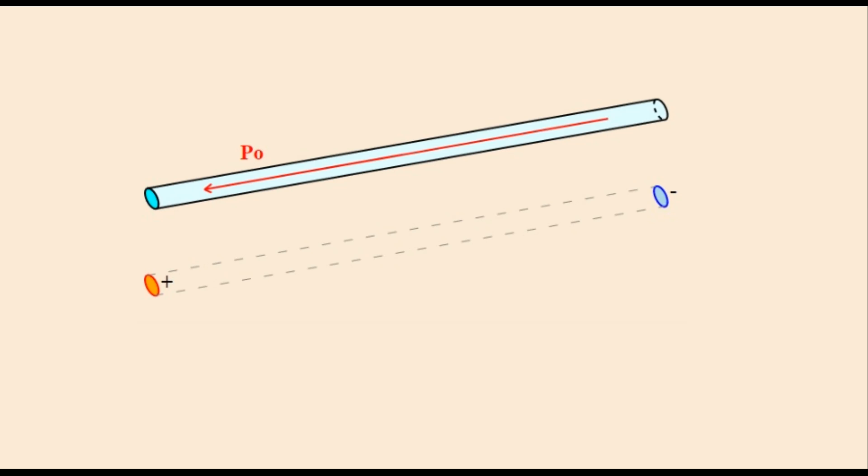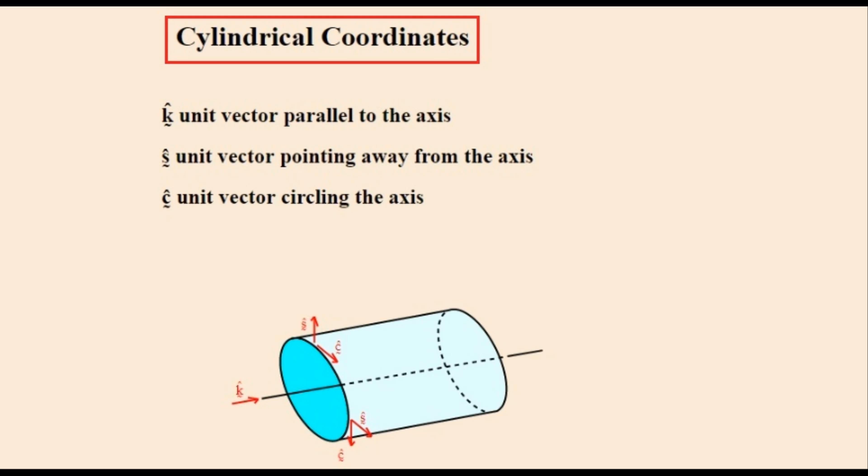A good example is a thin electrically polarized rod as shown, which can be substituted for by two charged discs shown underneath it. Cylindrical coordinates will be used. Unit K is the axis vector which is always constant and doesn't change with position.